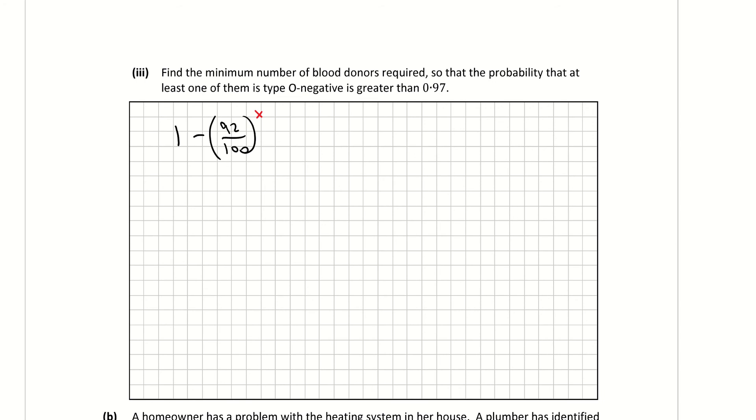And the question says at least one of them is greater than 0.97. So I'm just going to use my greater than symbol, 0.97. So let's turn them all to decimals since they've given us the 0.97. So 1 minus 0.92 to the power of x, some unknown power, is greater than 0.97.